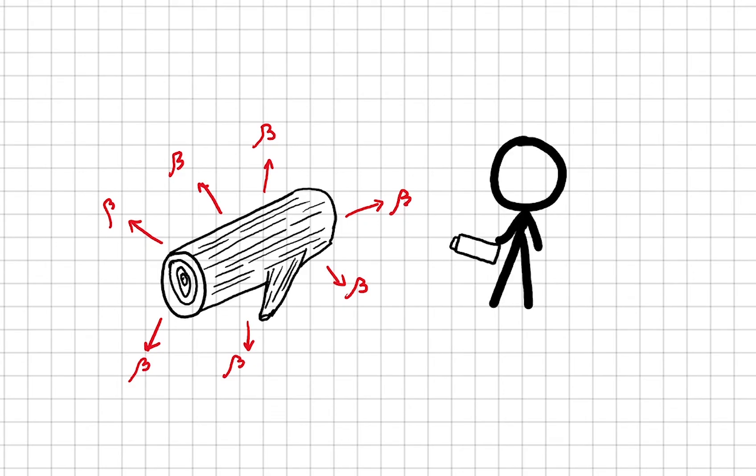We can point a Geiger-Muller tube at the object. The Geiger-Muller tube will detect the number of beta particles emitted over a given time. The higher the count rate is, the more carbon-14 atoms there are in the object.